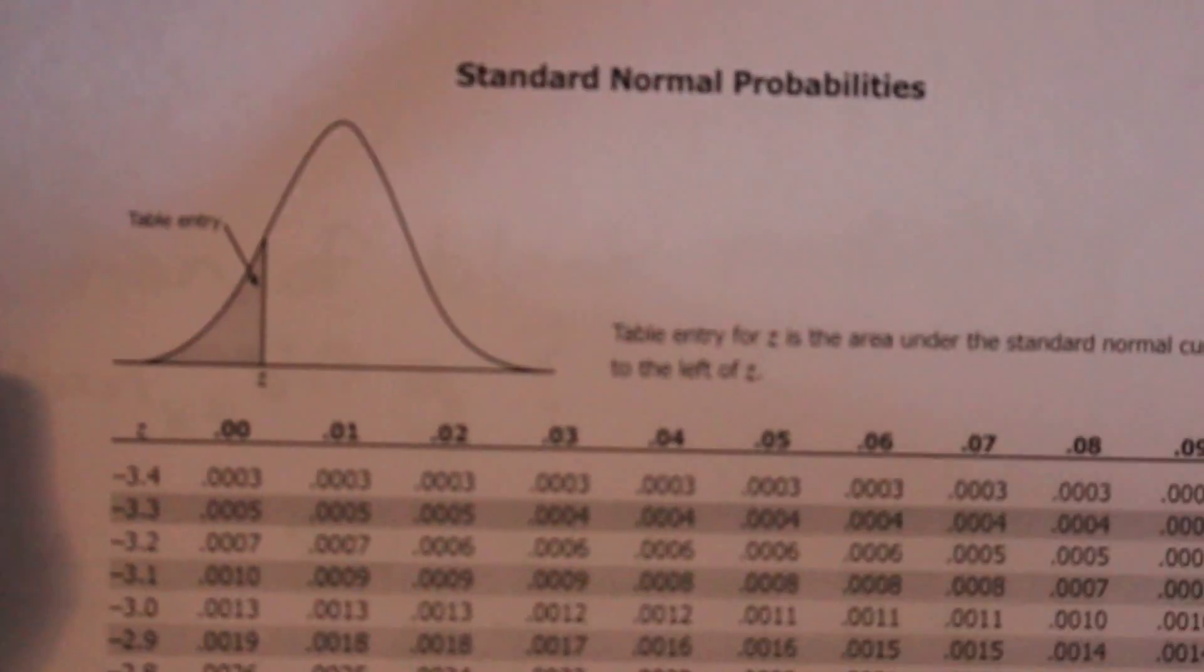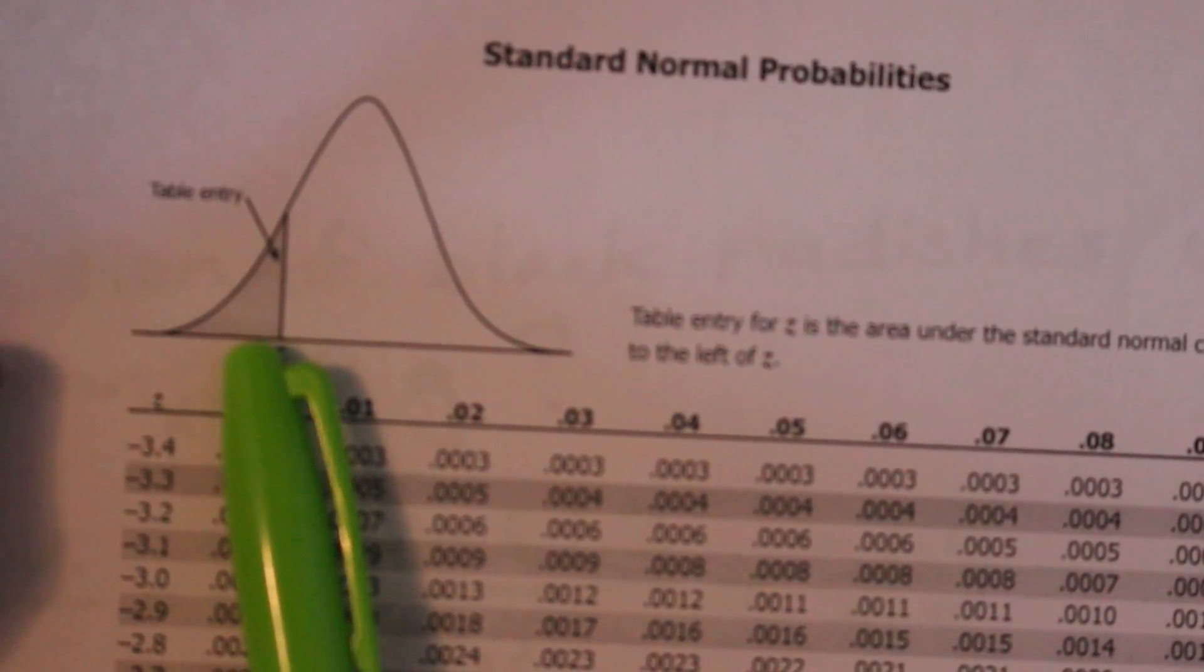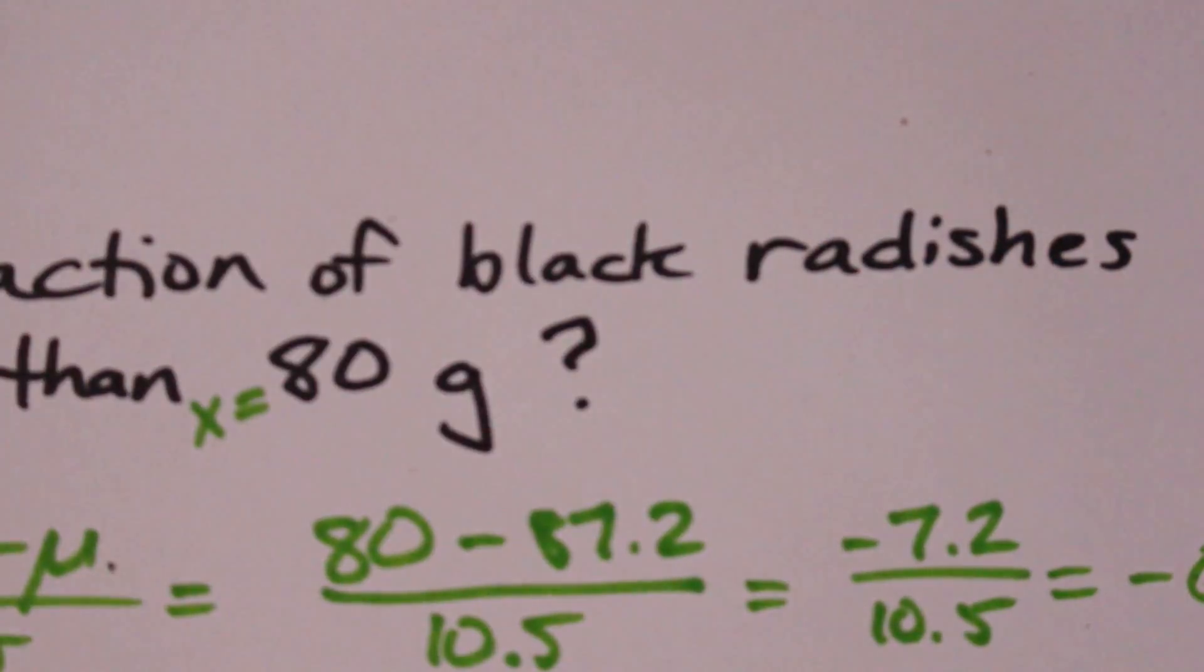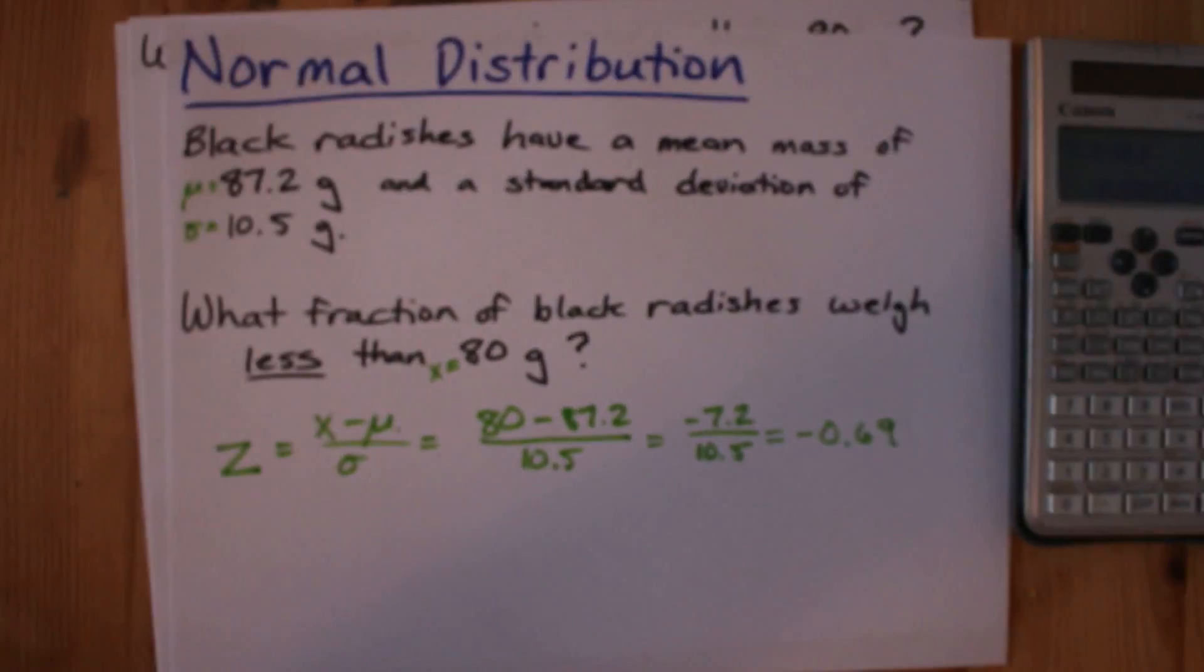By definition, this table is giving you the fraction that is less than whatever threshold you picked. So, let's come back out here for the question.